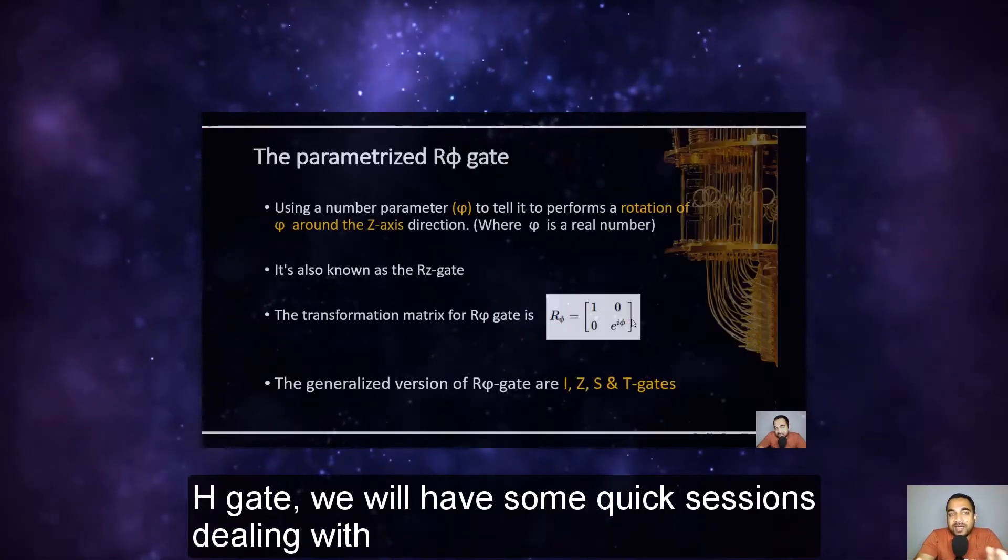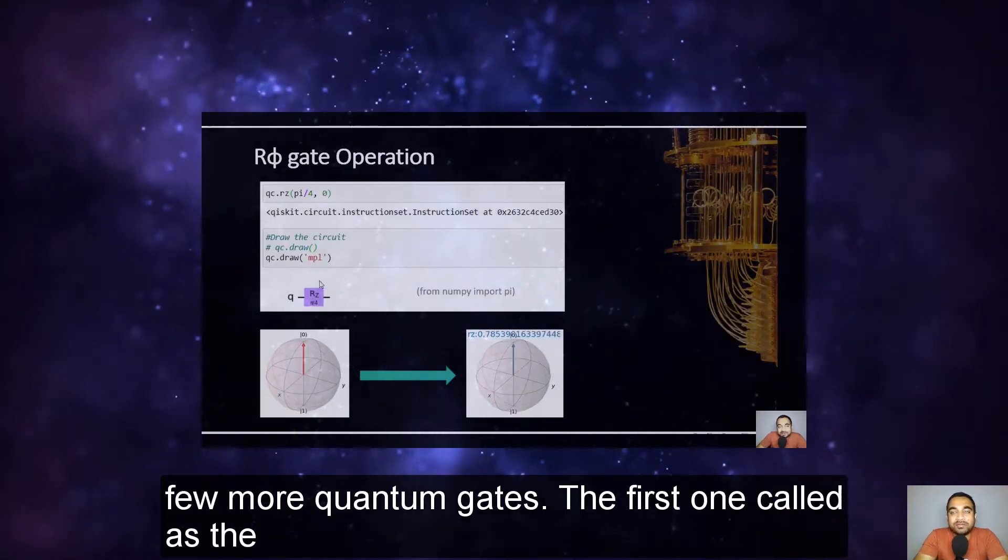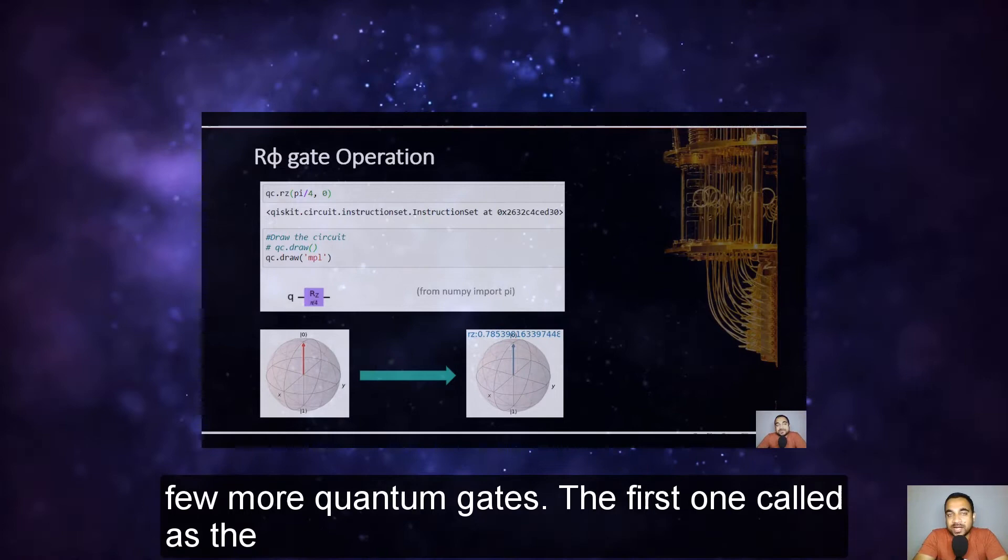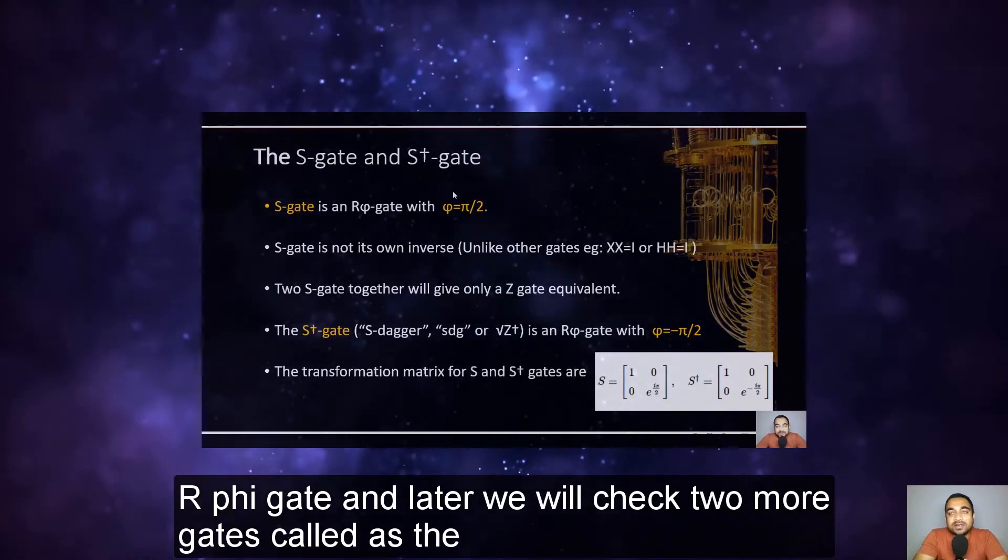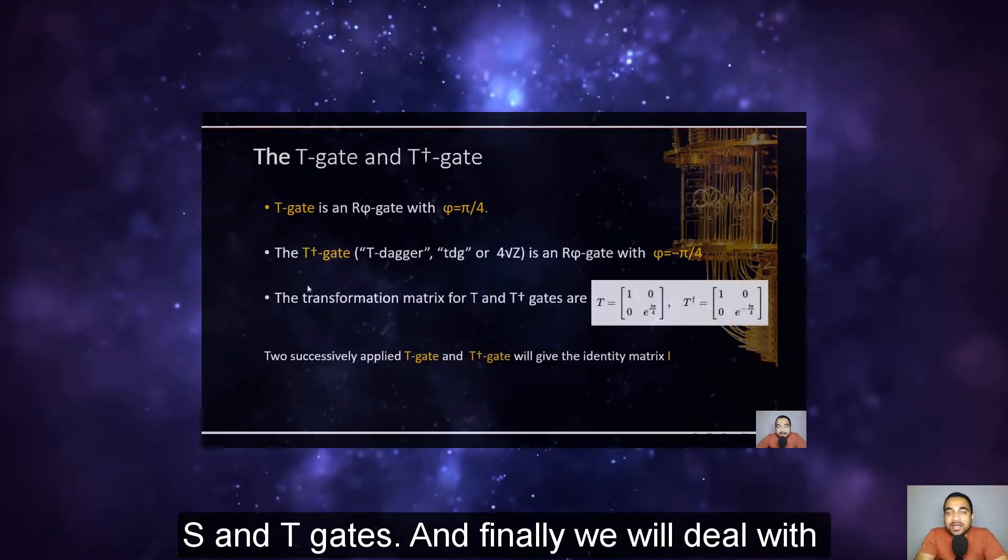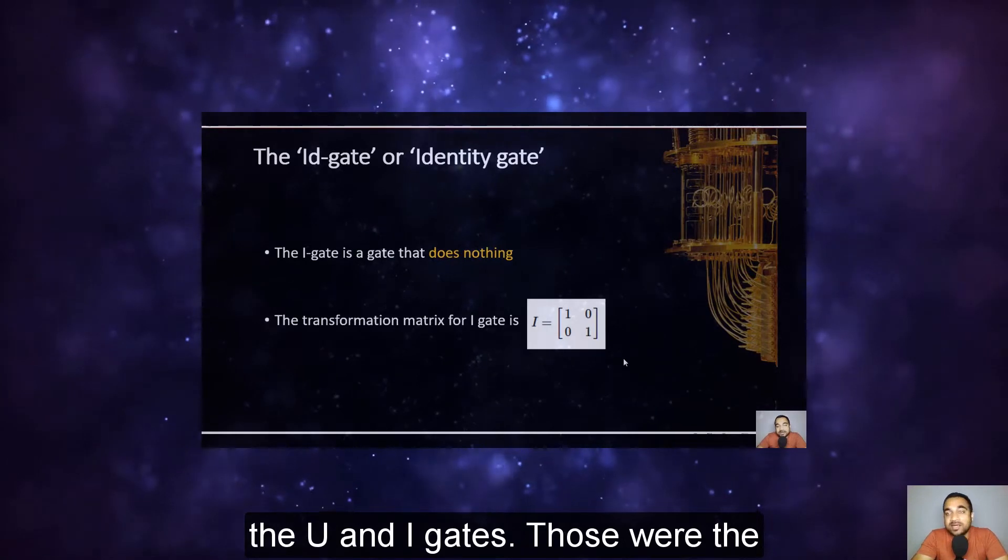And after H gate, we will have some quick sessions dealing with few more quantum gates. The first one called as the R5 gate. And later we will check two more gates called as the S and T gates. And finally we will deal with the U and I gates.